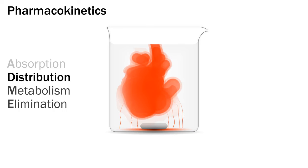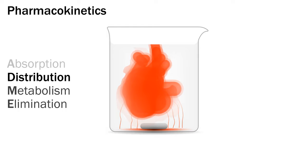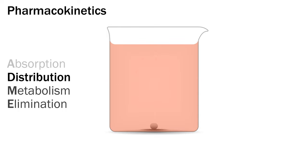Increasing entropy favours the overall movement of a substance from a region of high concentration to low, in a very similar manner to temperature. Another form of movement is convection of fluids — for example, the rapid intermixing of venous blood as it passes back through the heart. If you see the term 'well stirred' in a textbook, it refers to the assumption that within a compartment the drug or substance is rapidly and evenly mixed.